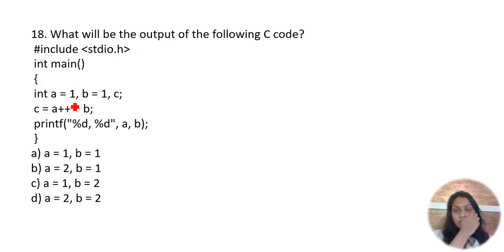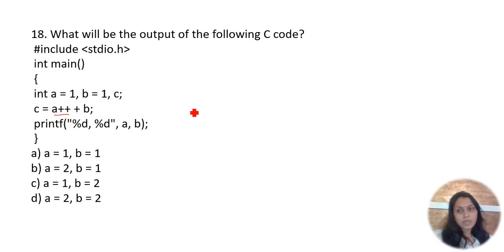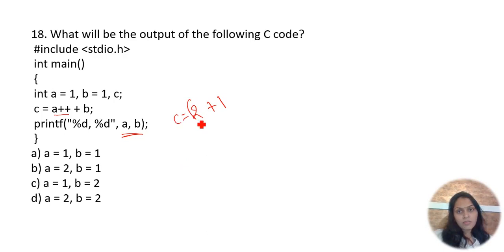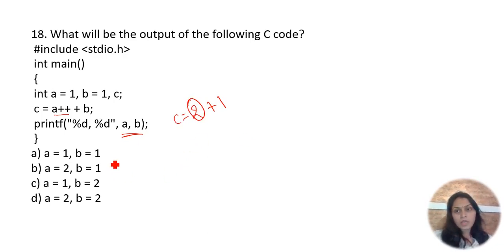What will be the output of this C code? a=1, b=1. c = (a++) + b: a is post-incremented, so the expression uses a=1, then a becomes 2. c = 1+1 = 2 (but only a and b are printed). So a is 2 and b is 1. Option B is the correct one.